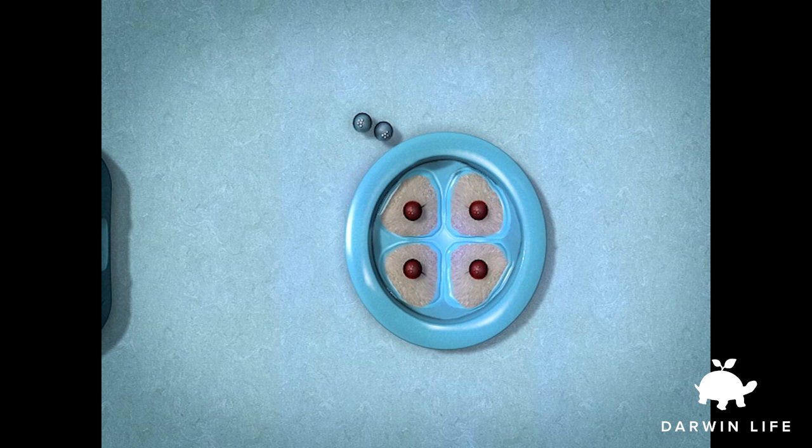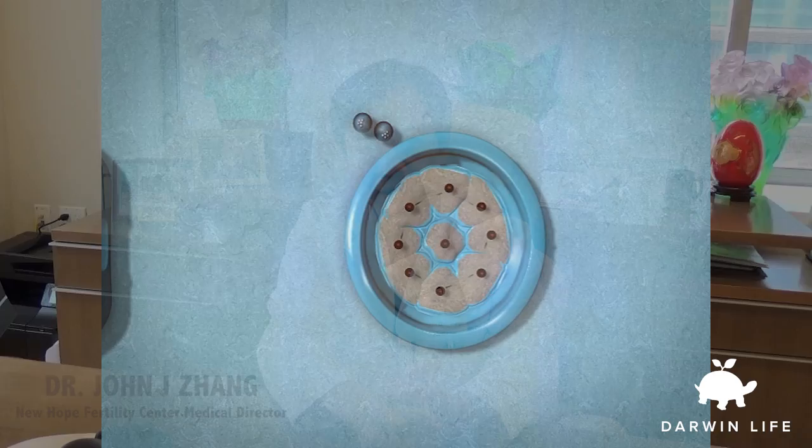What is the application of this technique? Currently, the major application is for patients with a special DNA defect in the cytoplasm — also called the egg white. Using the chicken egg as an analogy: we remove the egg yolk, which carries the nuclear DNA that determines who you are, and transfer it into another egg with a normal egg white. In this way, the reconstituted oocyte can resume normal function and in turn produce a healthy baby.